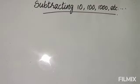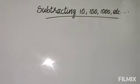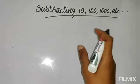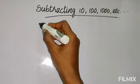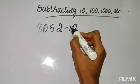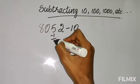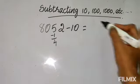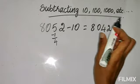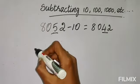Next: subtracting 10, 100, 1000, and so on — the same concept you had in addition. When you subtract 10, you subtract 1 from the tens place only. For example, from a number where the tens place has 5, you minus 1 from the tens place: 5 minus 1 gives 4. Only the tens place changes; the ones place, hundreds place, and thousands place all remain the same.